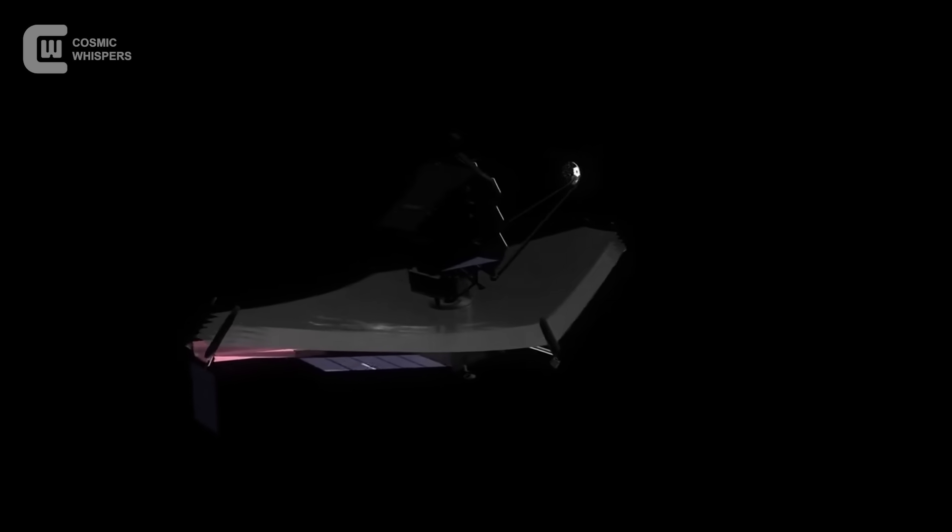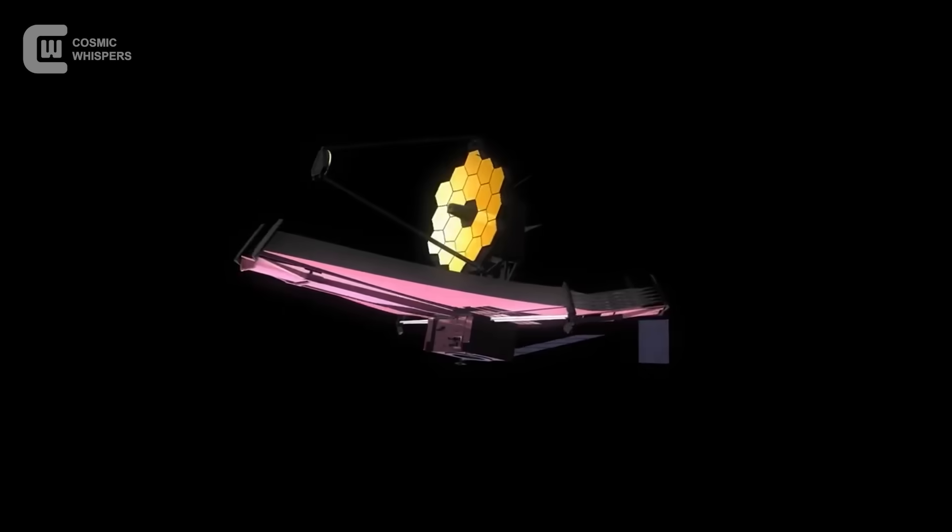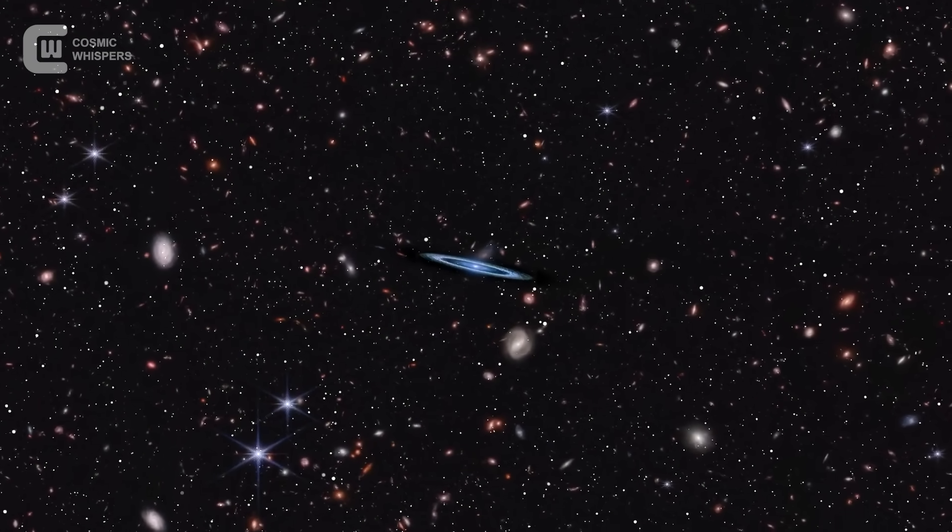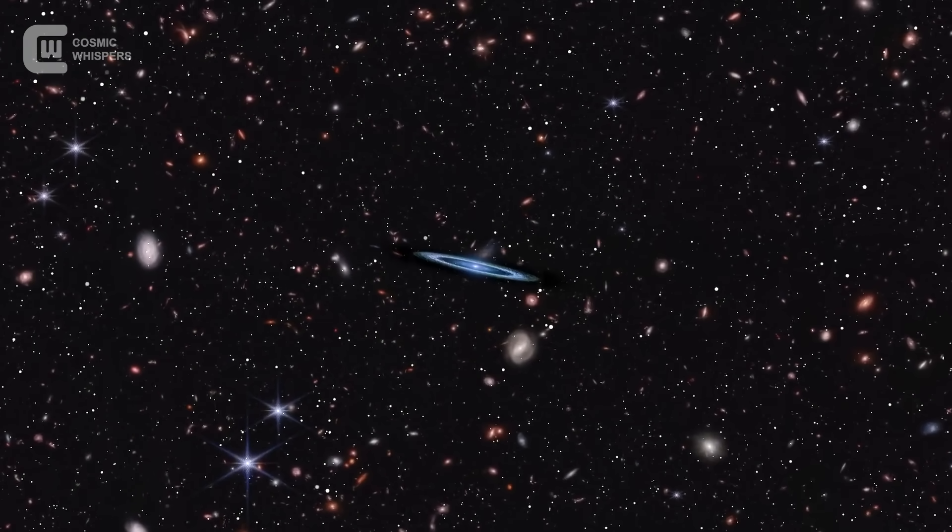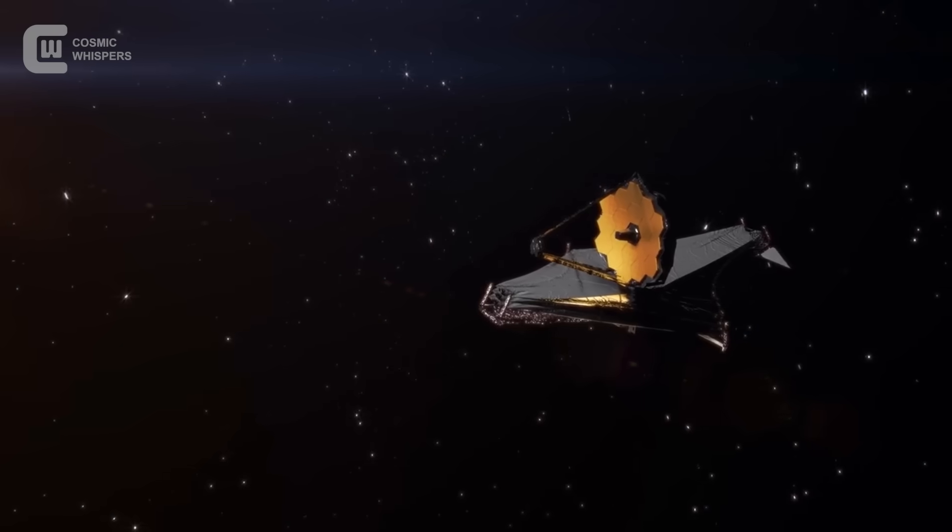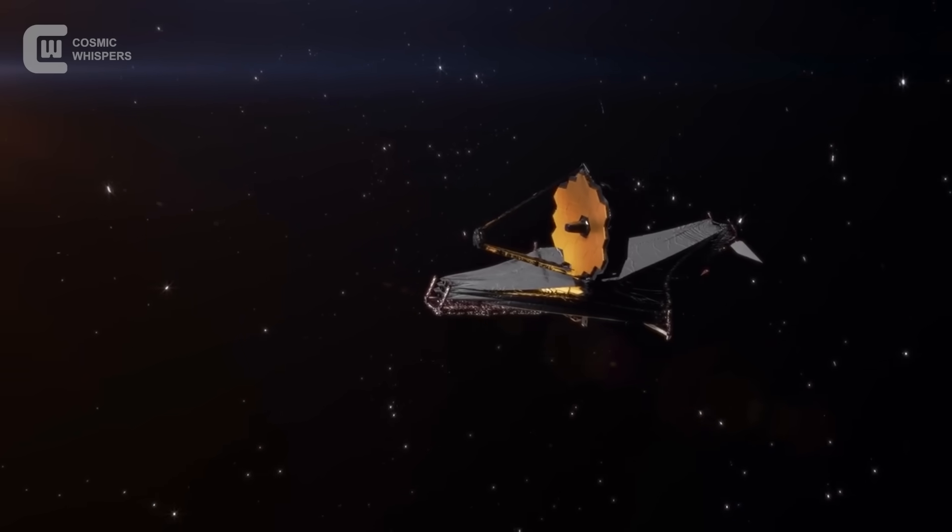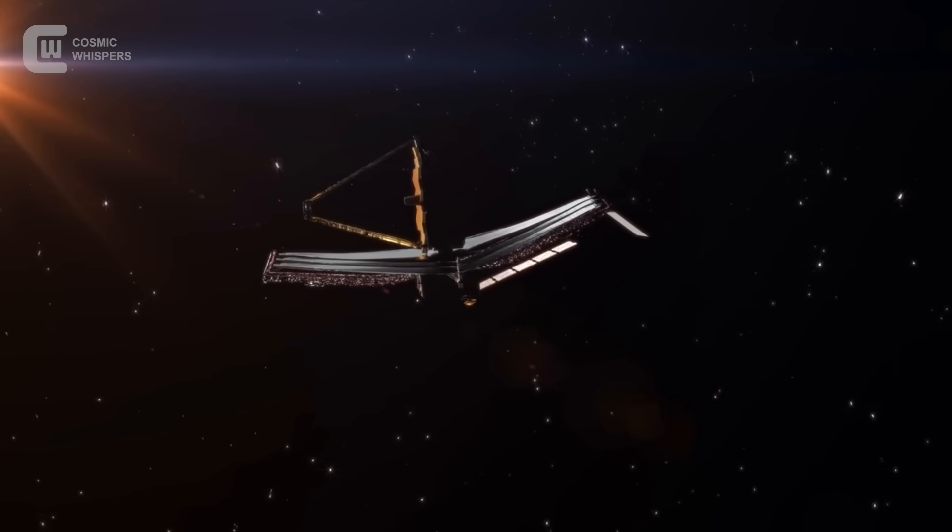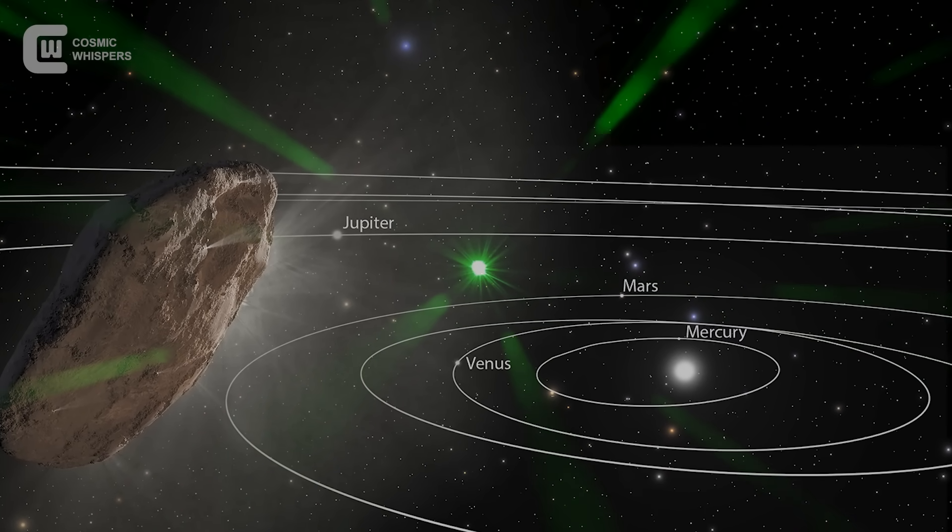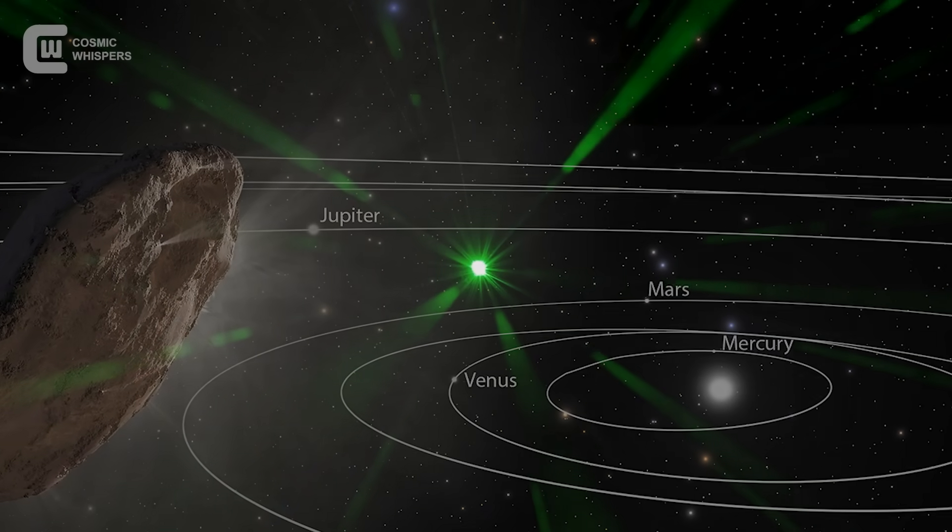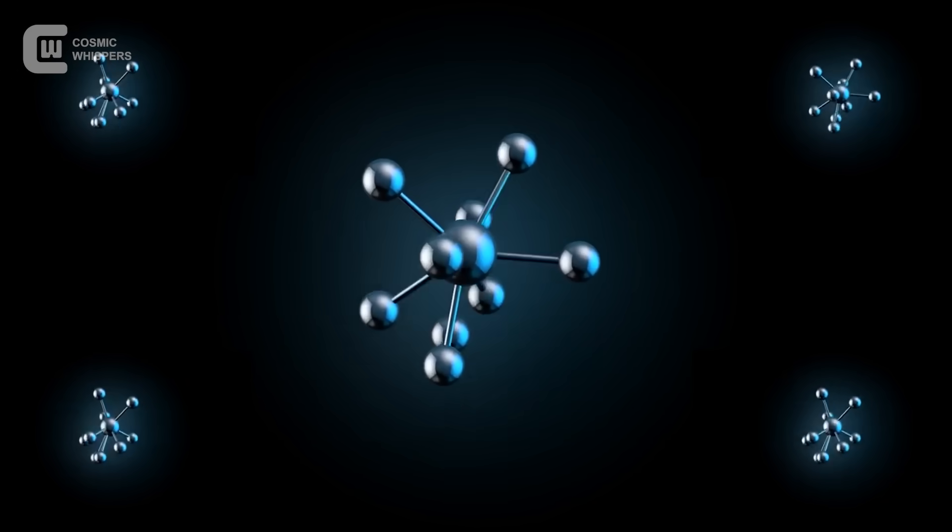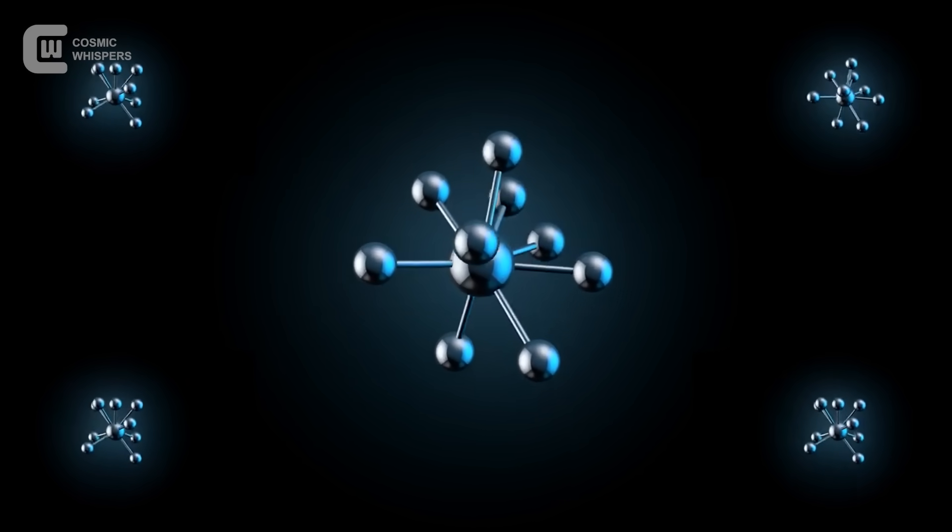But in the years that followed, new eyes and new tools would turn toward the stars. And in 2024, one of them would find something. In late 2024, the James Webb Space Telescope captured something extraordinary. A faint infrared signature, far beyond the planets. Perfectly aligned with the projected path of Oumuamua. For the first time, we had chemical data.